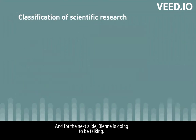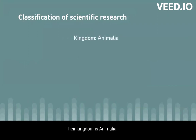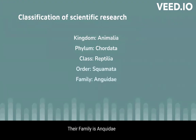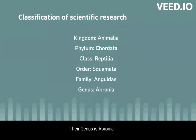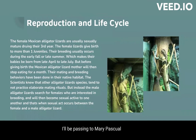The classification of scientific research: their kingdom is Animalia, their phylum is Chordata, their class is Reptilia, their order is Squamata, their family is Anguidae, their genus is Abronia, and their scientific name is Abronia graminea.